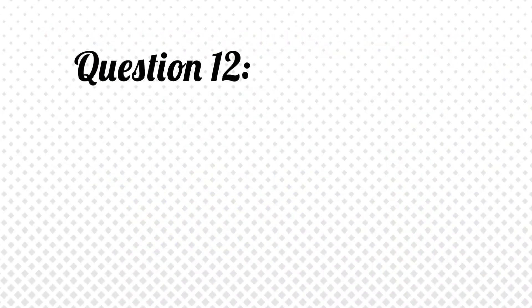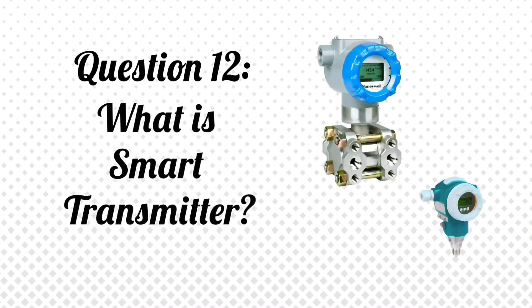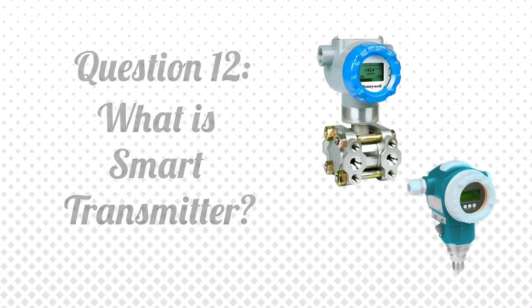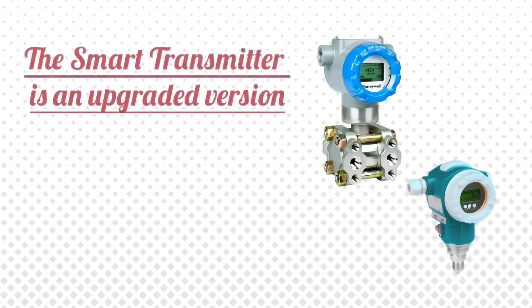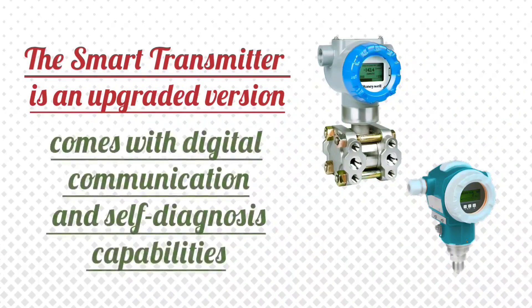Question 12: What is a smart transmitter? Answer: A smart transmitter is an upgraded version of a transmitter that comes with digital communication and self-diagnosis capabilities.